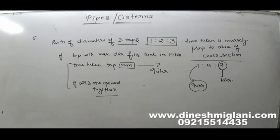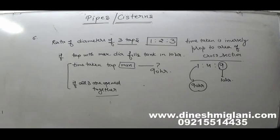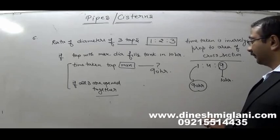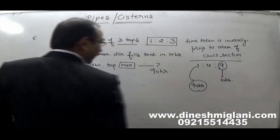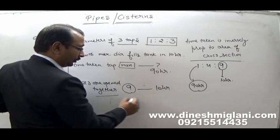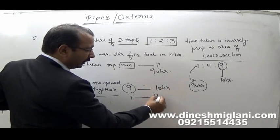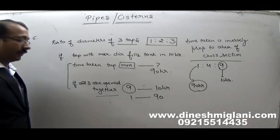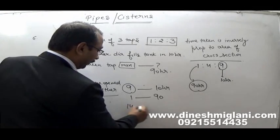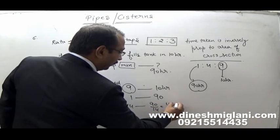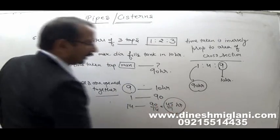For the second question — if all three are open together — total cross section area = 9 + 4 + 1 = 14. When area is 9, time is 10 hours; when area is 1, time is 90 hours; so when area is 14, time is 90/14 = 45/7 hours. That becomes your answer.